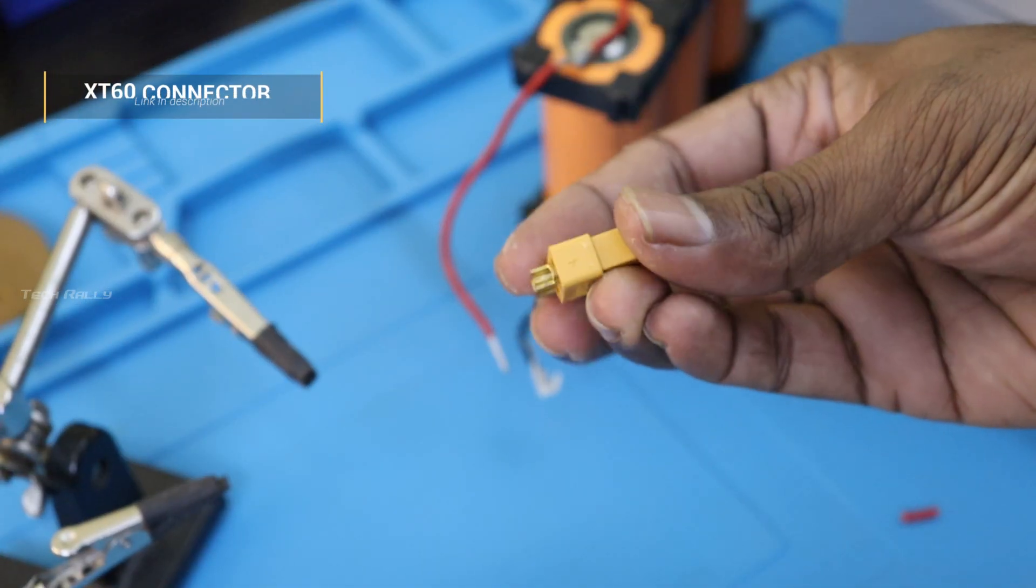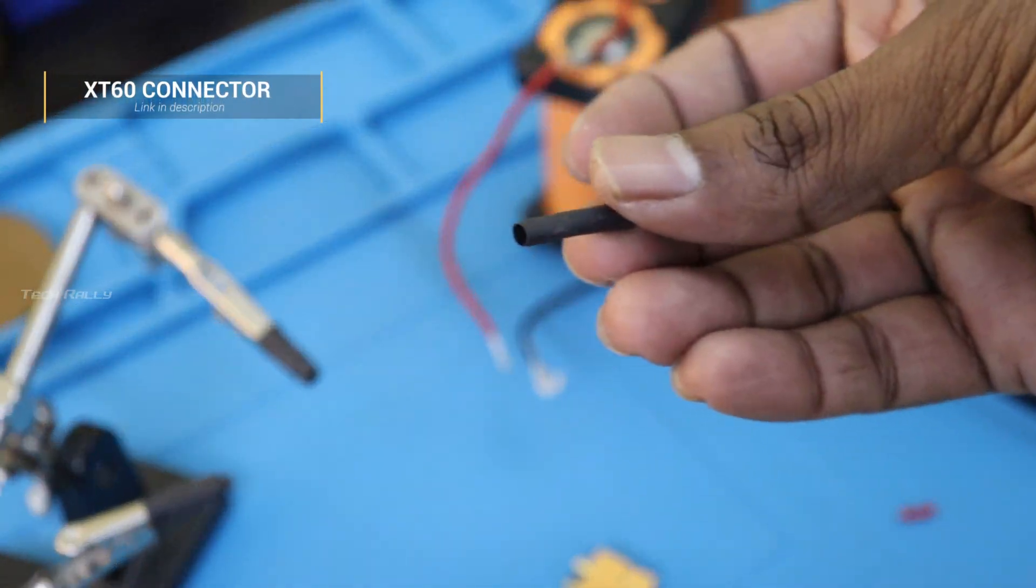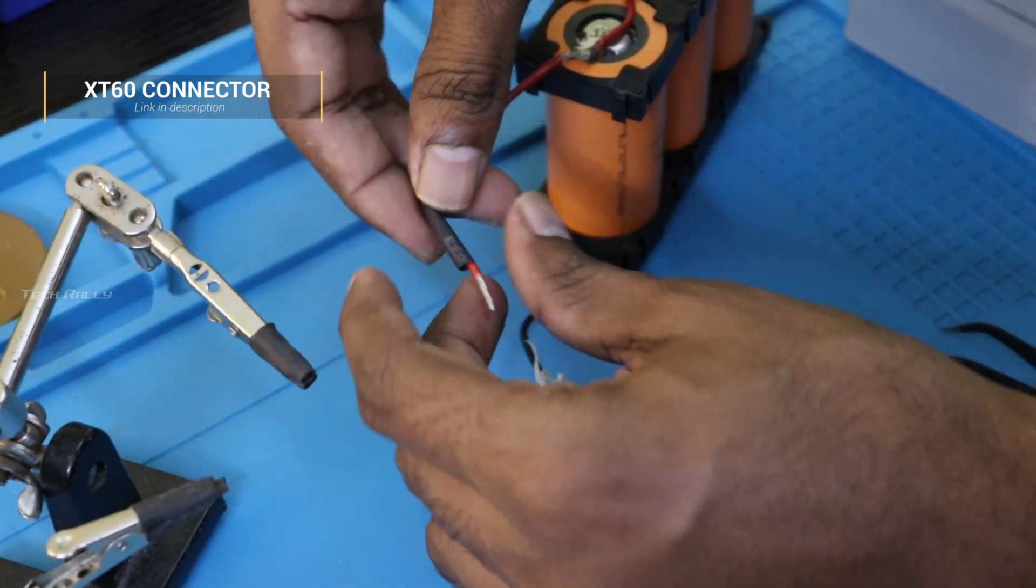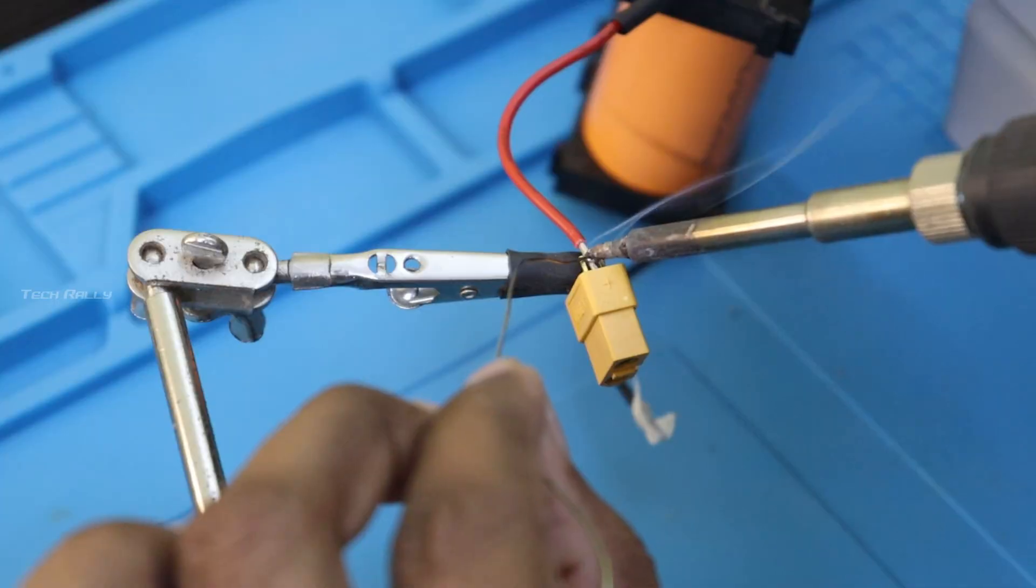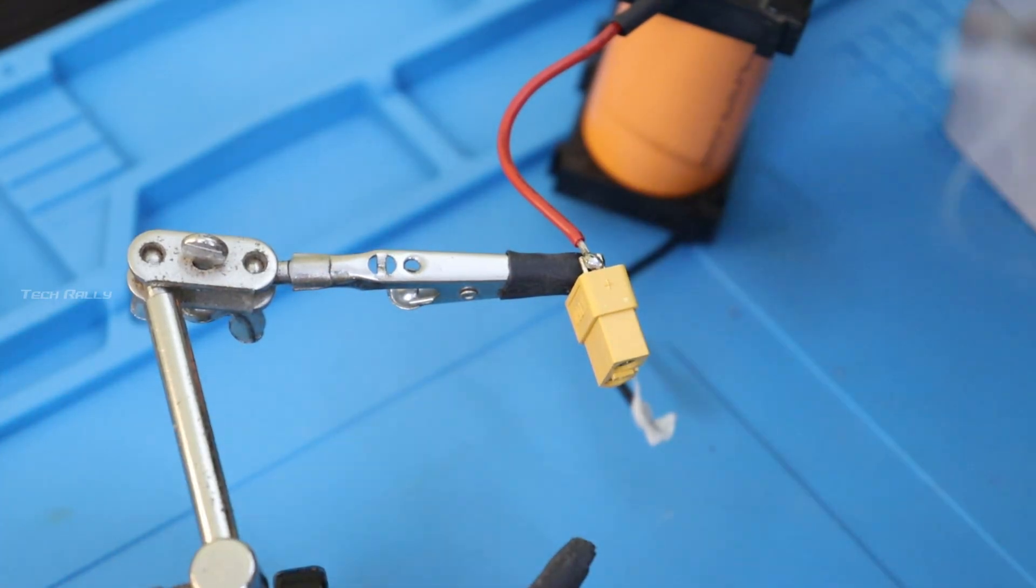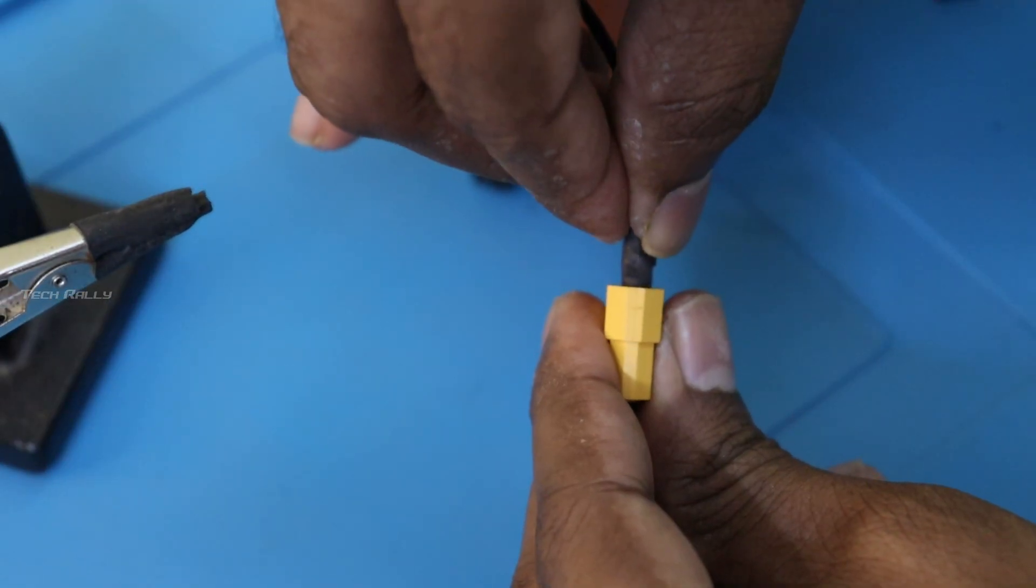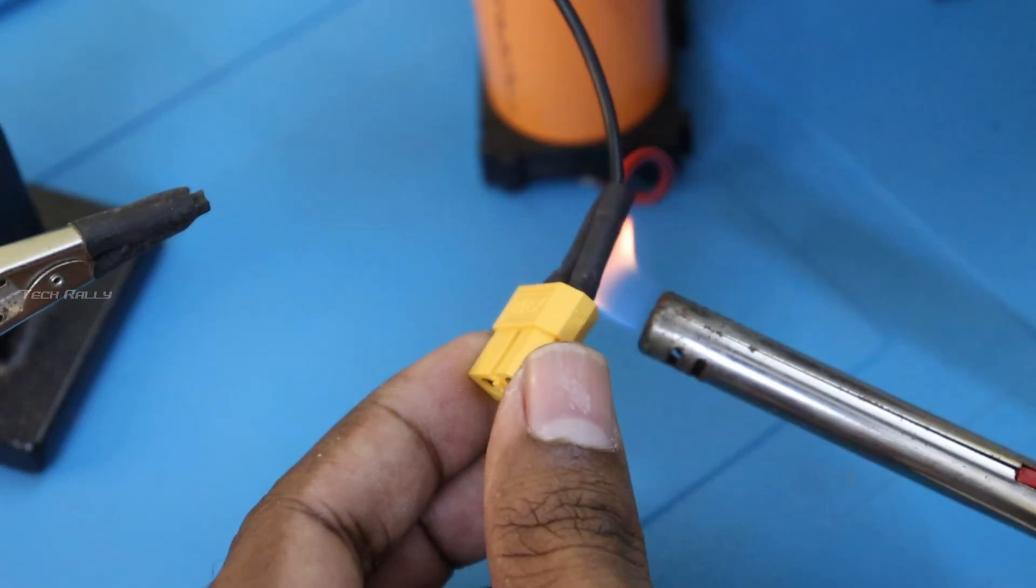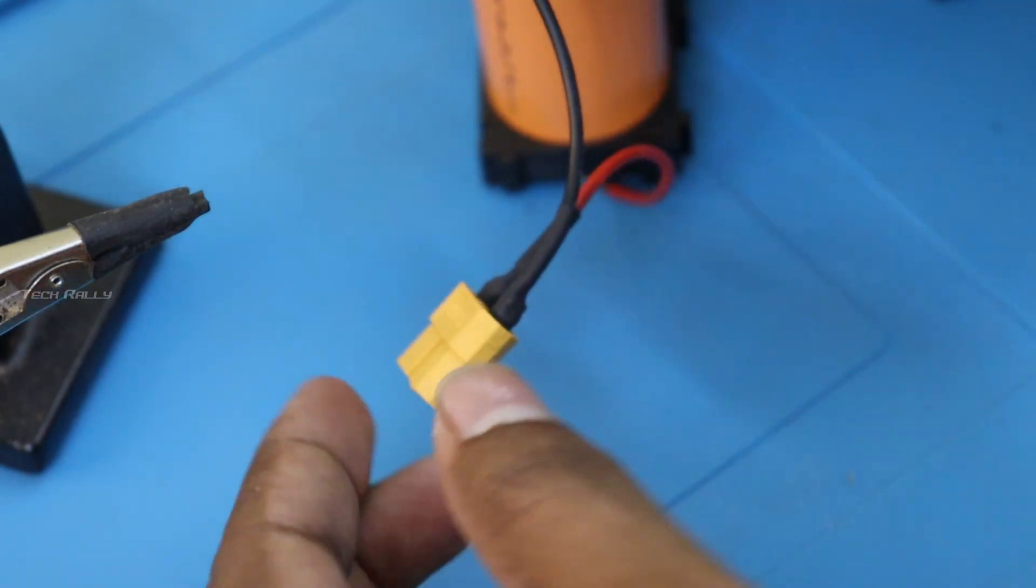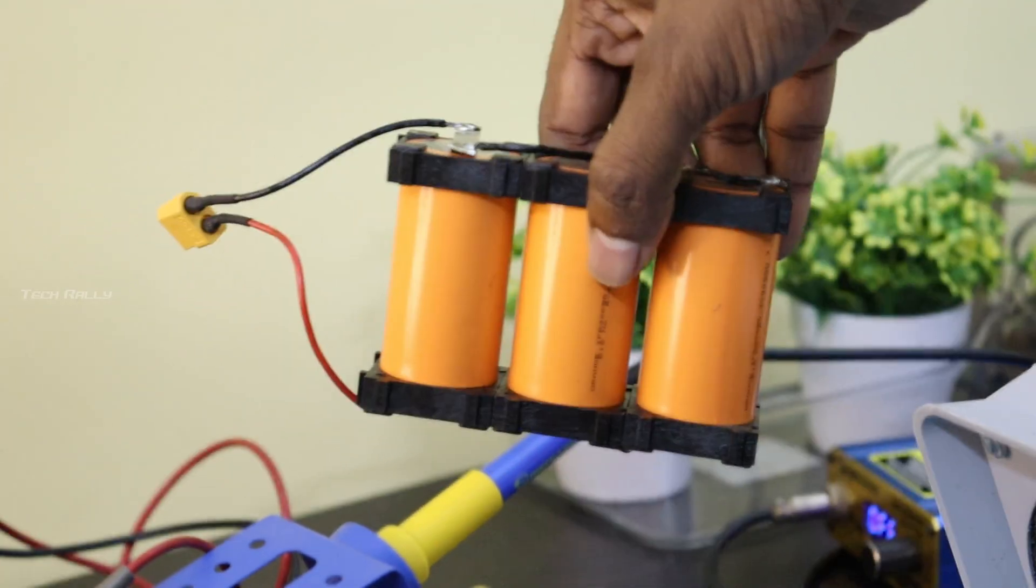I am using an XT60 connector to connect the battery and the module, but you can also directly solder the battery to the module. Now the battery pack is ready.